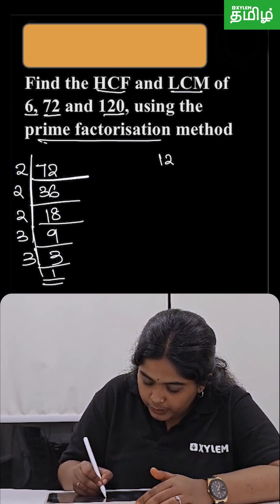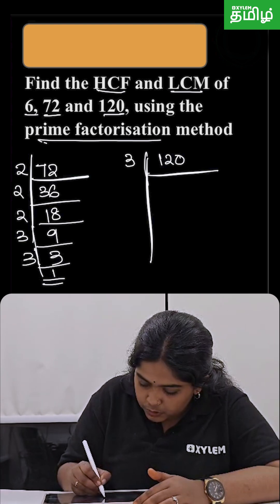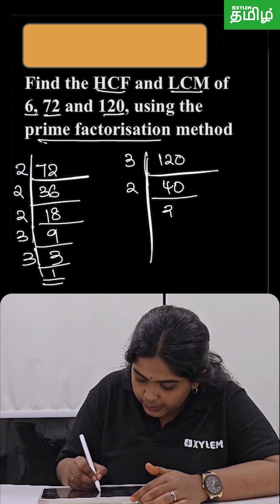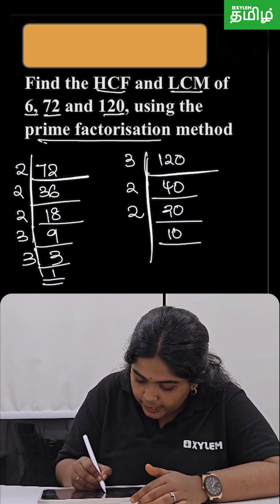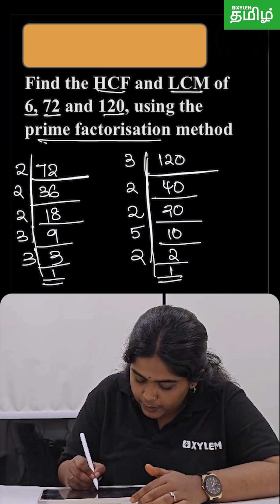Okay, so now I am going to do 120 prime factorization. Now, 2 times 60. So it is 40. Again, 2 times 20. Again, 2, 10. Again, 5, 2, and 1.